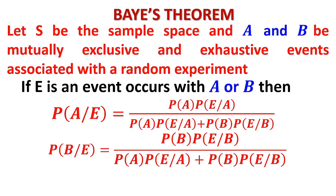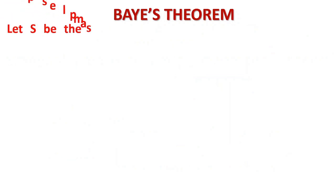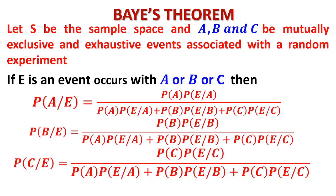Remember, whatever is on the right-hand side can be calculated. We are going in the reverse order for Bayes' theorem — we want to find the probability of the event of the first experiment knowing the result of the event of the second experiment. Now if you take three events A, B, C, then A given E, B given E, C given E can all be found. Please notice that the denominator in all the formulae of Bayes' theorem is the total probability formula only.